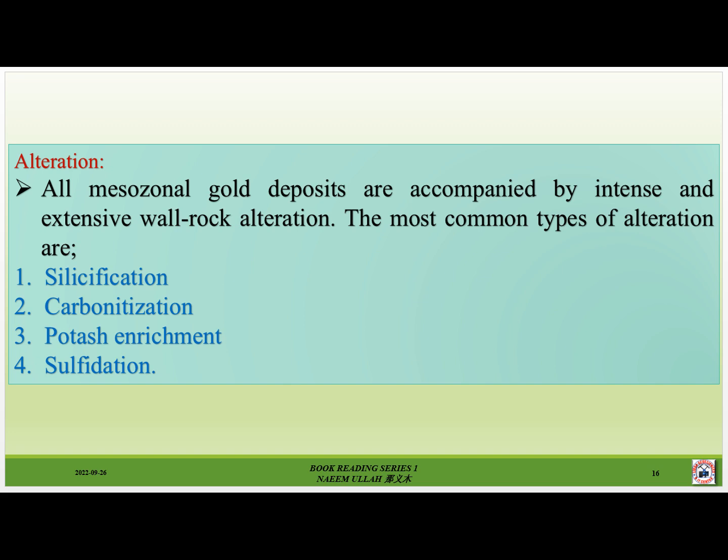All mesozonal gold deposits are accompanied by intense and extensive wall rock alteration. The most common types of alteration are: number one, silicification; number two, carbonatization; number three, potash enrichment; and number four, sulfidation.